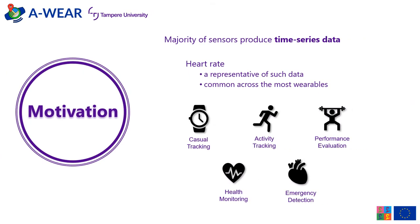The majority of sensors produce time series data. An example of such data is heart rate, which is also one of the most commonly measured types across all wearables. As different wearables serve different purposes, the required measurement frequency and accuracy also differs. Consider the following scenarios: low-requirement wearables meant for casual tracking do not require frequent or very accurate measurements, whereas wearables designed to detect emergency situations such as cardiac arrest require low latency and reliable accuracy.